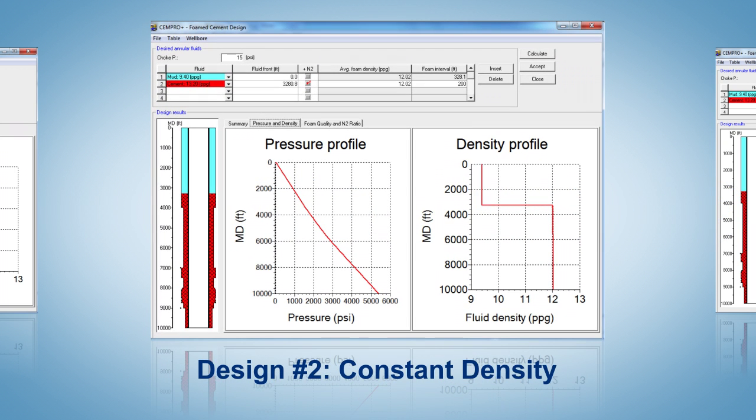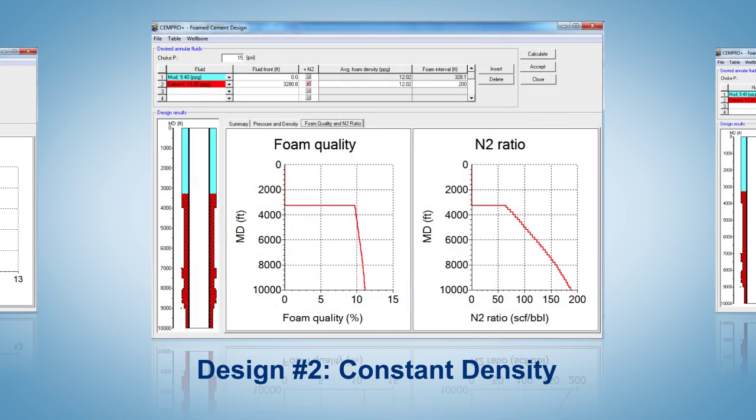The constant density technique requires increasing the nitrogen flow rate as the slurry is pumped into the well. This example requires 21 stages of nitrogen loading ratios.